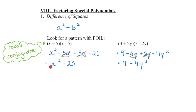So when we're given a difference of squares polynomial, check first of all if there is a greatest common factor. Then recognize that the outside product and the inside product always end up zeroing out. That's why we don't have an x term or a y term — the outside and inside always zero out.